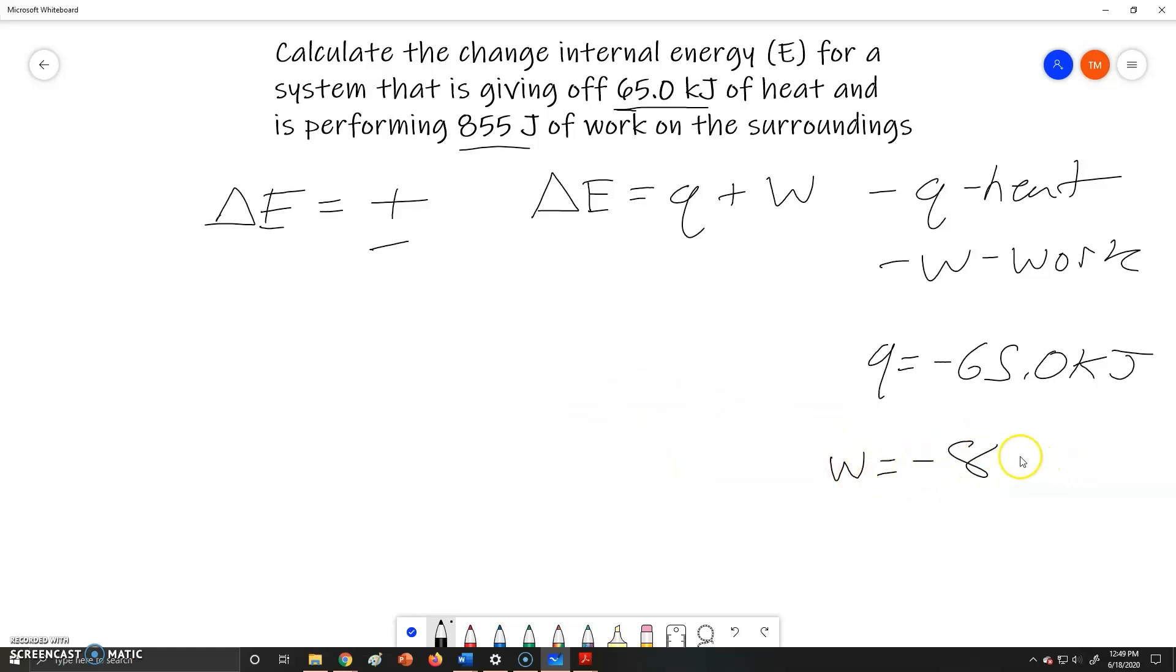That's also going to be negative 855 joules. If work was done on the system by the surroundings, then work would be positive, but here the system is doing the work so the work is negative. But also pay attention to the units here - we've got kilojoules and we've got joules, so we can also write this as 0.855 kilojoules just by dividing by 1000.